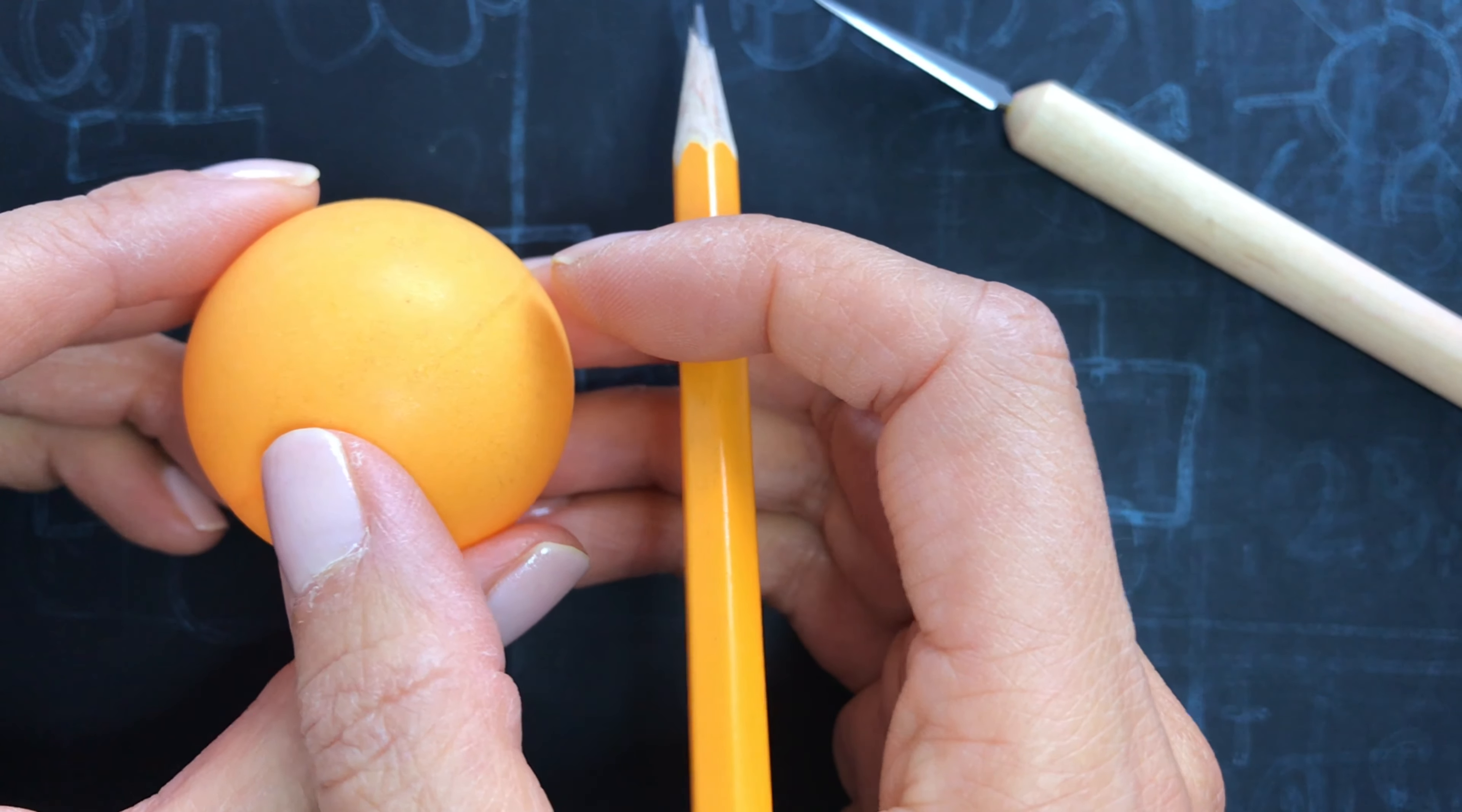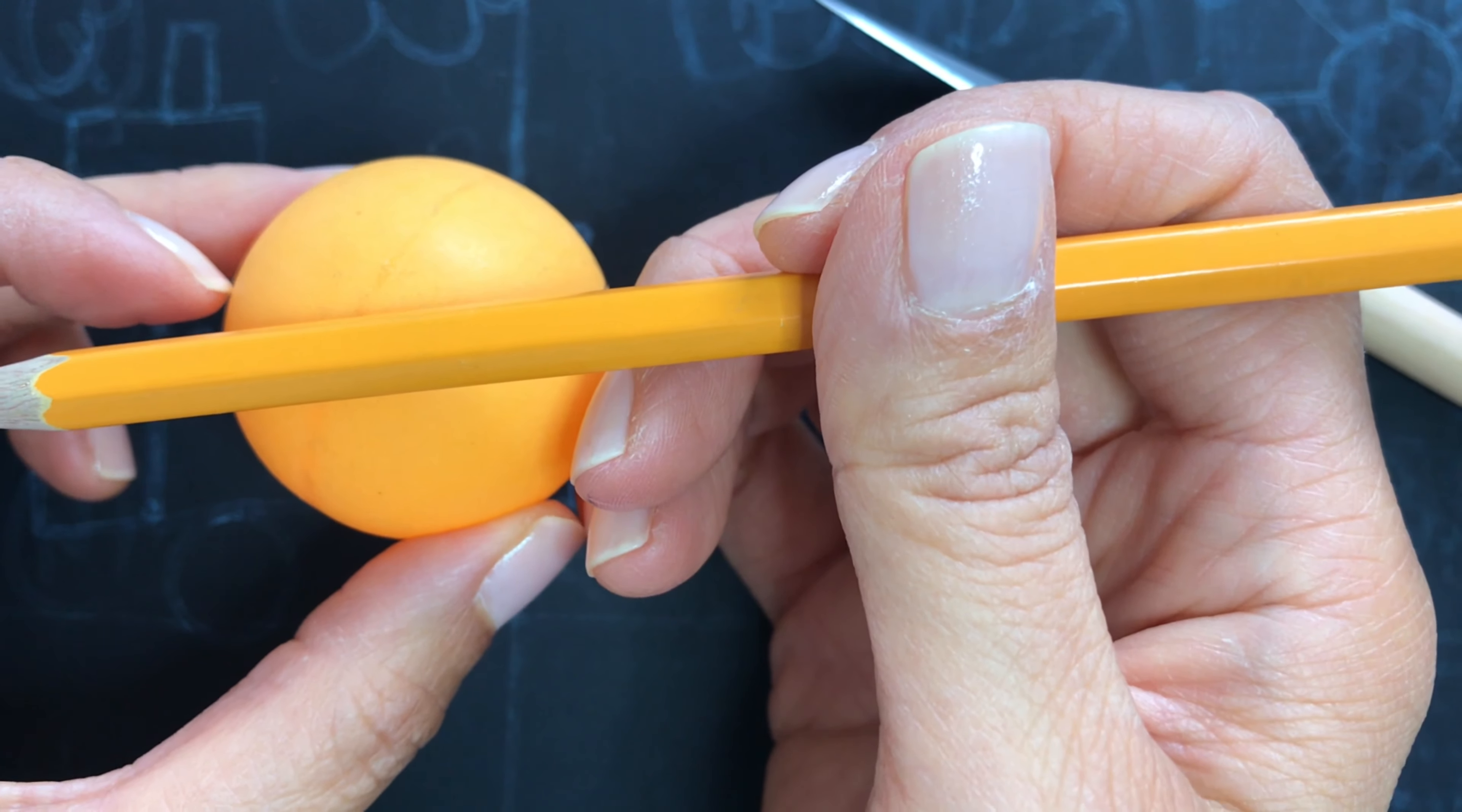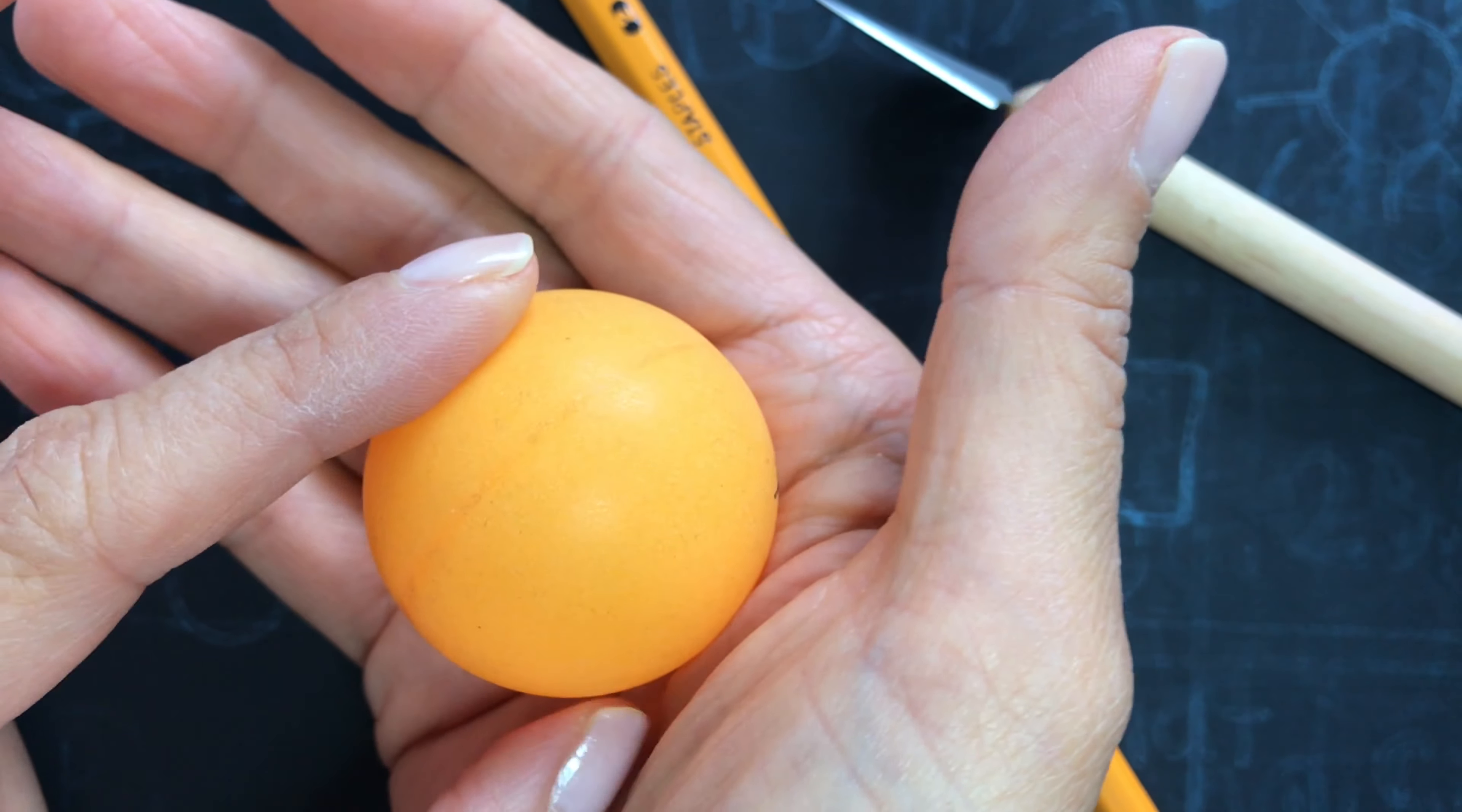I want to make a mark on the ping pong ball. I made one mark over here, and the other side will be about the same on the other side. I want to leave a little bit more space on the bottom because it will go inside of kid's hand.